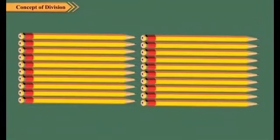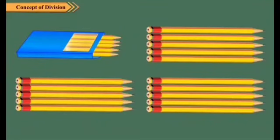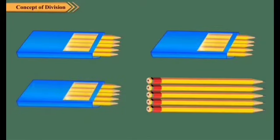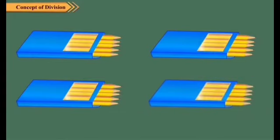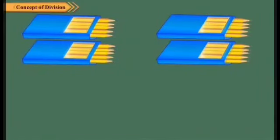Now let's take an example. We have a set of 20 pencils and we want to keep 5 pencils in one packet. So we first put 5 pencils in one packet, then another 5 in second packet, the next 5 in the third packet and the next 5 in the fourth packet. Now we can see there are no pencils left.